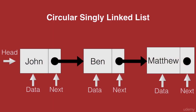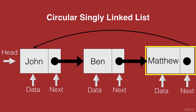To construct a circular singly linked list, let's first take a singly linked list. We have a list with three nodes — John as the head node, Ben as the second node, and Matthew as the last node. One limitation of a singly linked list was not being able to go back to previous nodes. A circular singly linked list helps us overcome that problem to a certain extent. From the last node, we establish a connection back to the head node, so you can revisit earlier nodes.